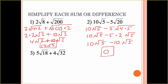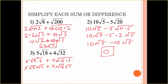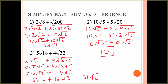Pause the video and try number 3. For number 3: break square root of 18 into square root of 9 times 2, and square root of 32 into square root of 16 times 2. We have 5 times square root of 9 times square root of 2 plus 4 times square root of 16 times square root of 2. Square root of 9 is 3, so 5 times 3 is 15 square roots of 2; square root of 16 is 4, so 4 times 4 is 16 square roots of 2. Now we have like radicals: 15 plus 16 is 31 square roots of 2. Make sure you get like radicals and then combine them.